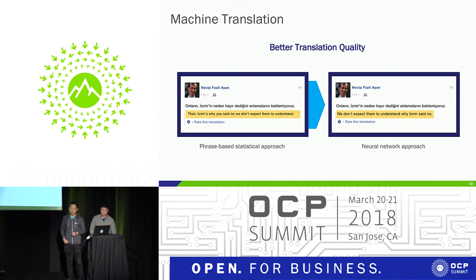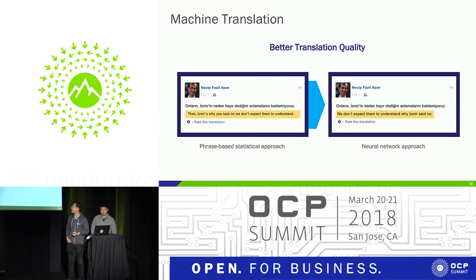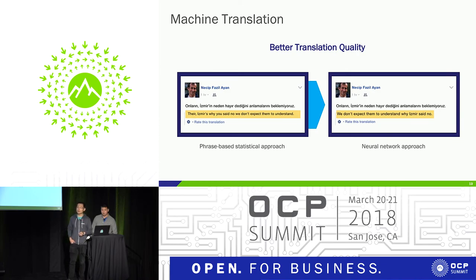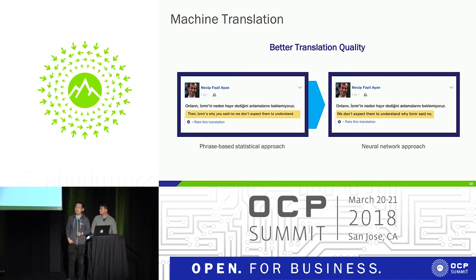If we upgrade to a neural network approach, we can significantly improve the translation quality. However, the neural network approach requires a lot more training power than the previous approach. With the Big Basin Volta platform, we can satisfy this increasing demand for training power, and empower our researchers and machine learning developers to build even larger and more complex models to help improve the user experience.